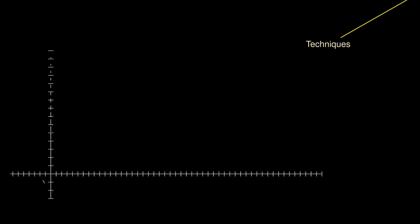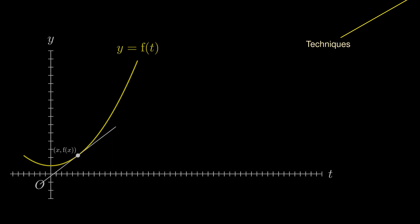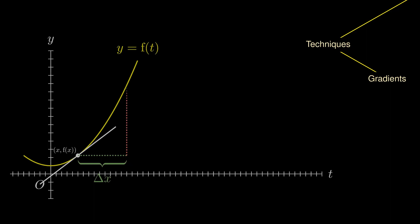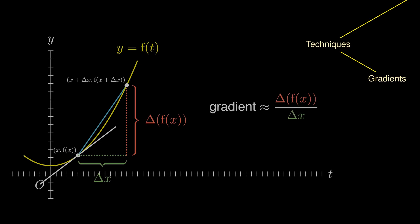Consider a function and a point that lies on the function. We want to find the gradient of the curve at this point, which is equivalent to the gradient of the tangent. Let's move delta x units to the right and consider a corresponding point on the curve. We're going to consider the gradient of the blue line, which can be calculated via the rise — which is delta of f of x — over the run, which is delta of x.